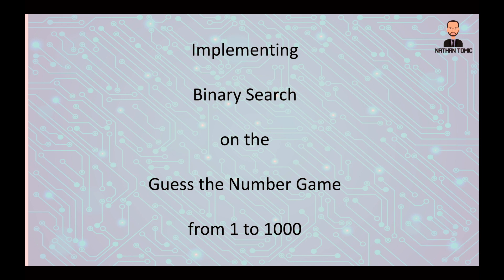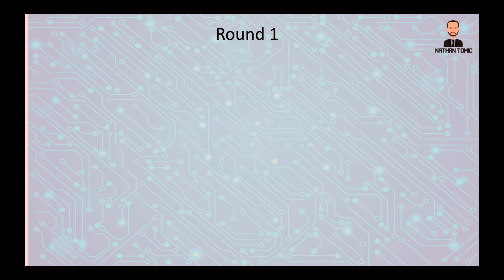In this video we're going to look at how you can implement the binary search algorithm on the guess the number game using numbers from 1 to 1000. For our first round we start with our number being 273, our secret number that the other person would be guessing. Let's look at how this works with the binary search algorithm.